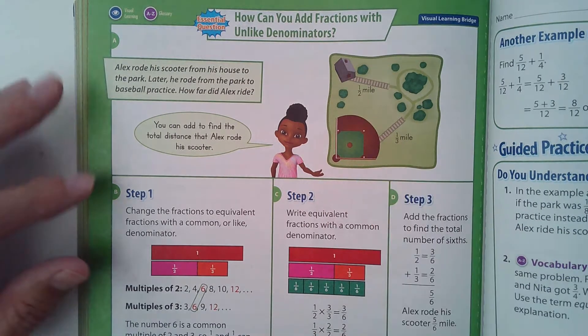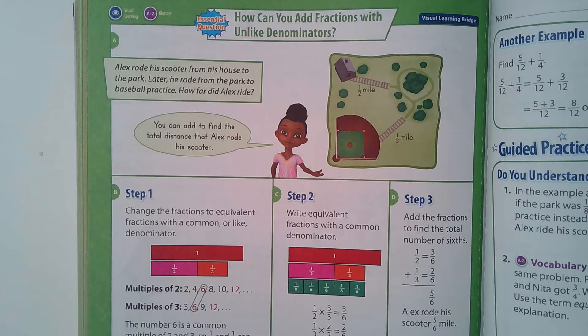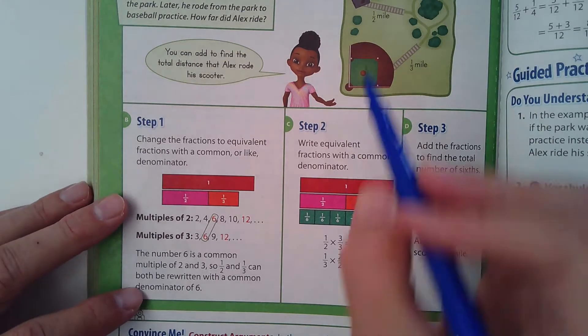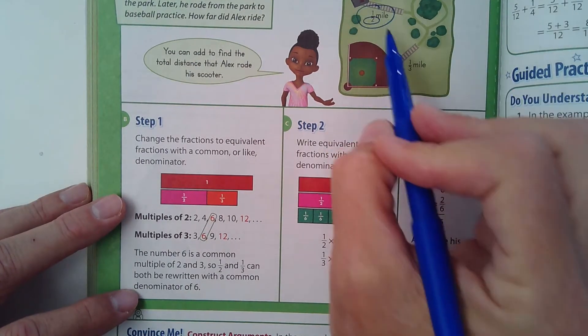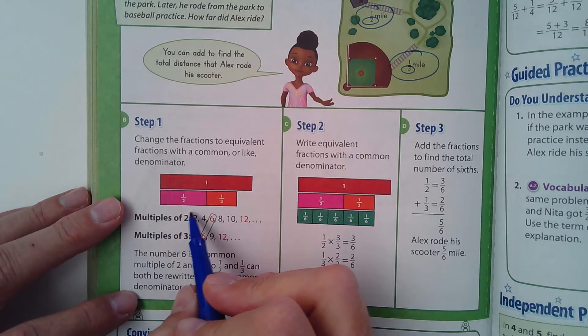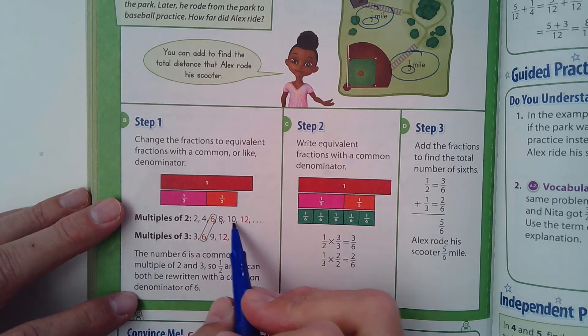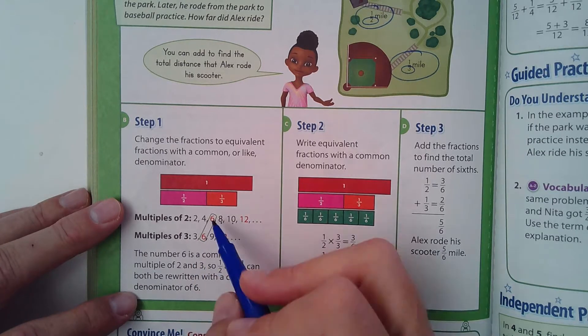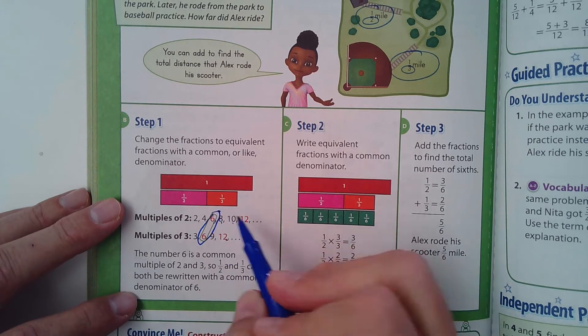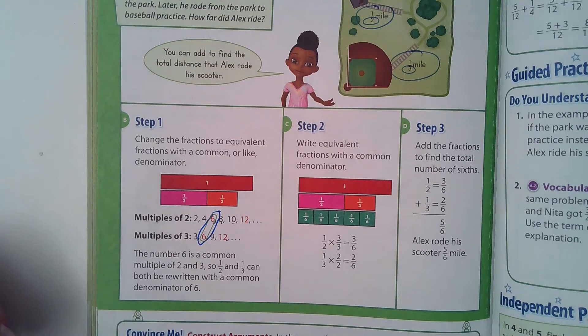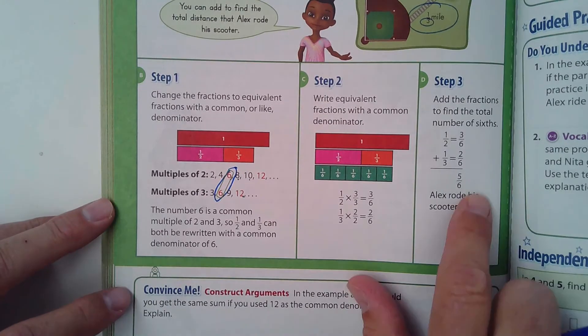They're telling you that you could just start doing multiples of the denominators. What's the denominator for a half? That's the 2. What's the denominator for a third? That would be 3. So they started writing multiples of 2: 2, 4, 6, 8, 10, 12. Then they started writing multiples of 3: 3, 6, 9, 12. The very first one that they come across is 6, so that would be the least common denominator if we were to add up one half and one third.